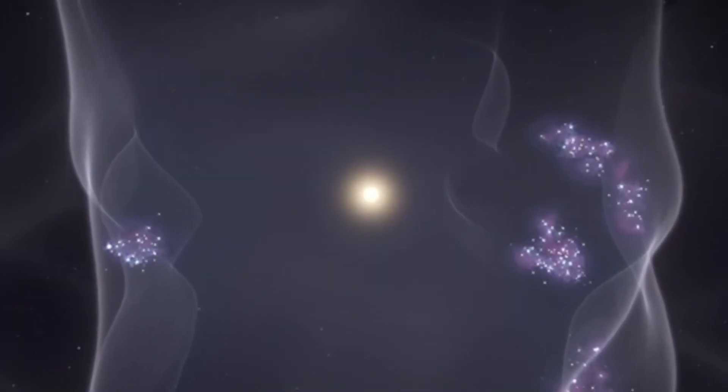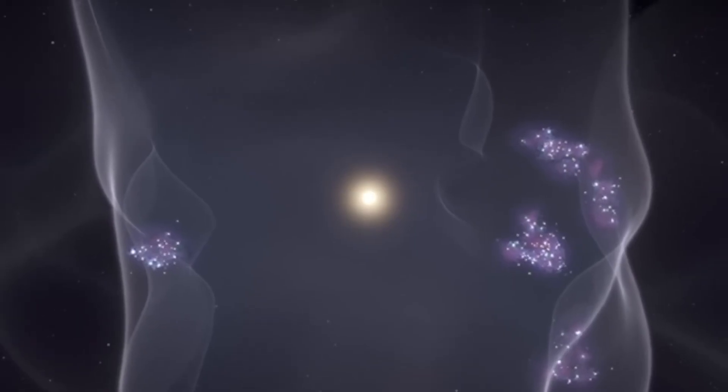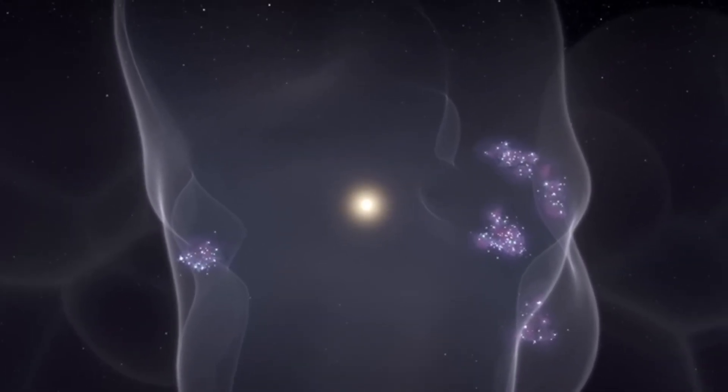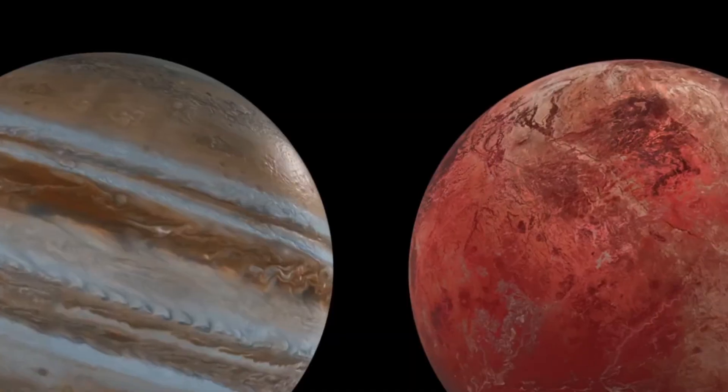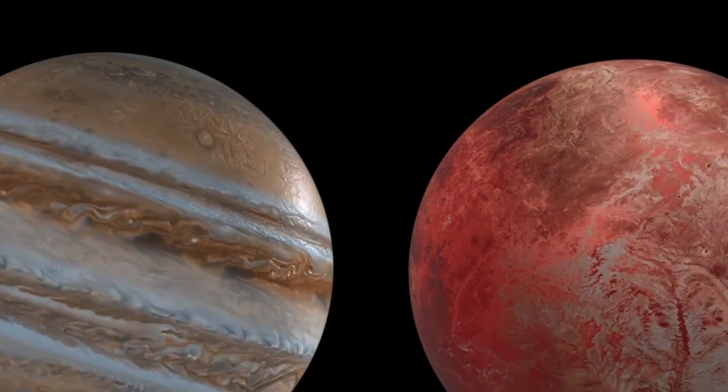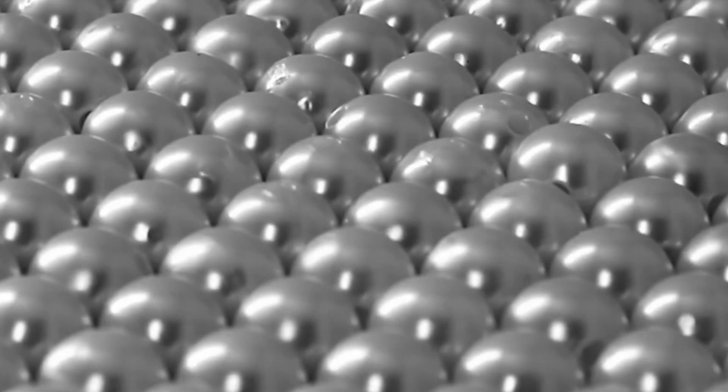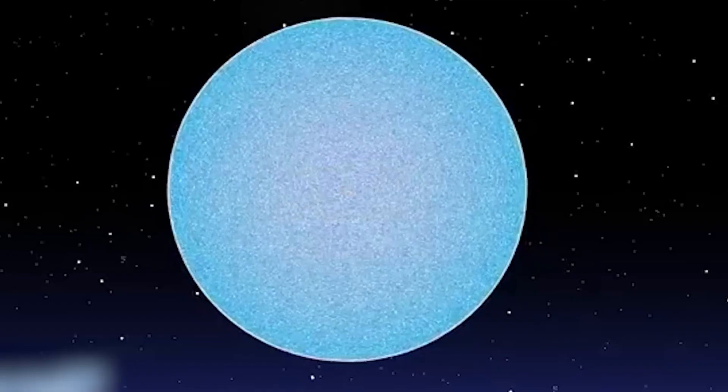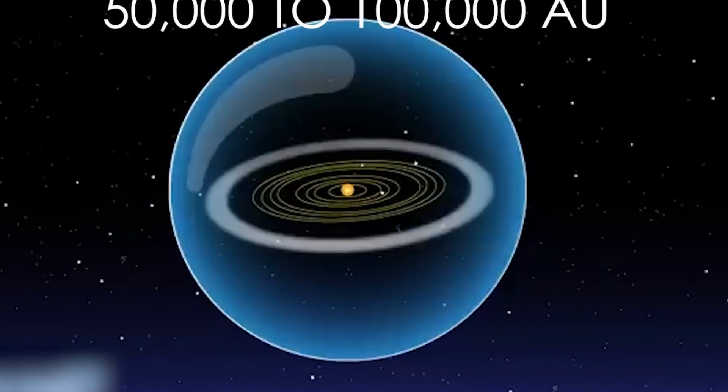Zooming out even further exposes perhaps the most shocking revelation of all. Our entire solar system is careening through space at breakneck speeds, constantly interacting with different galactic environments that mainstream astronomy conveniently glosses over. While they kept you focused on planets and moons, they've neglected to mention we're hurtling through the cosmos at over 200 kilometers per second, encountering cosmic structures that make our planetary system look microscopic by comparison.